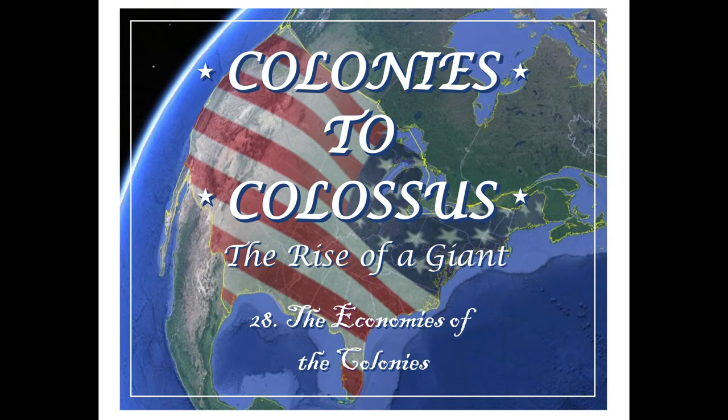The richest commodities produced in the 13 colonies were produced in the south. These included rice, indigo, and tobacco — all of which made a lot of money, and fortunes could be made if you could find the way to produce them.